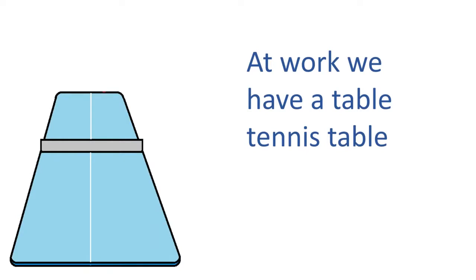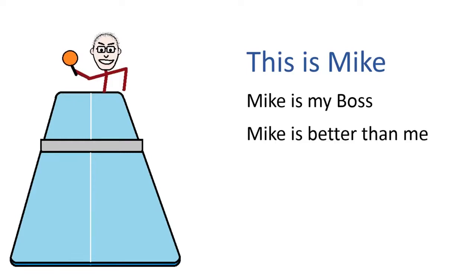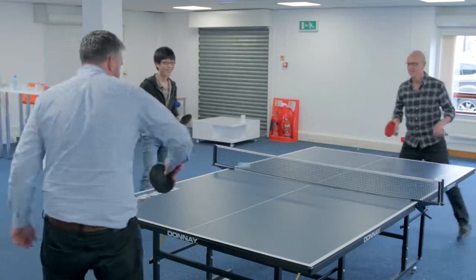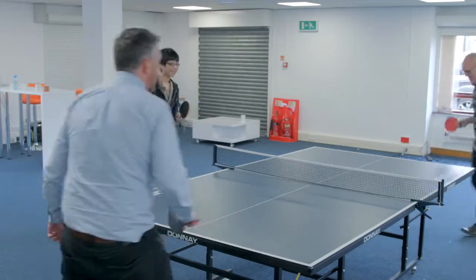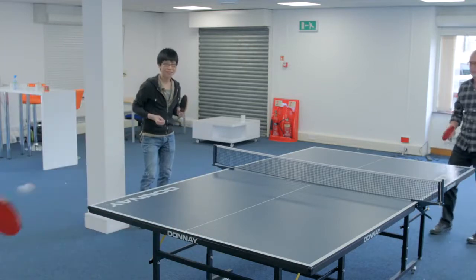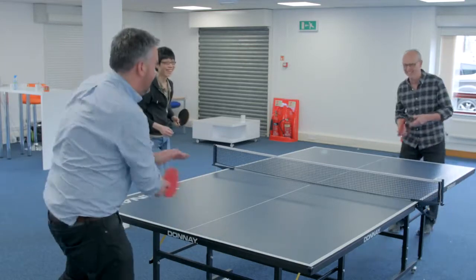At work, we have a tennis table. This is Mike. One thing you need to know is Mike is my boss. Mike is much better than me at table tennis, and Mike has been boasting relentlessly about being better than me. My problem is I need to beat Mike.